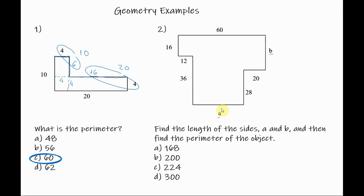So in order to find the length of side A we will use the lengths of the other horizontal sides here. So if we look at the top of the object we can see that this side length is the widest point of the object.